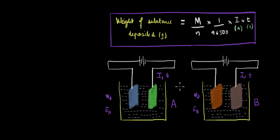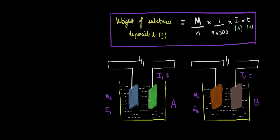What Faraday's second law says is that the ratio of the weights deposited — WA to WB — will be equal to the ratio of the equivalent weights of A and B, that is EA to EB. And as I mentioned, this relationship between the weights and the equivalent weights can be derived from the expression of the first law.